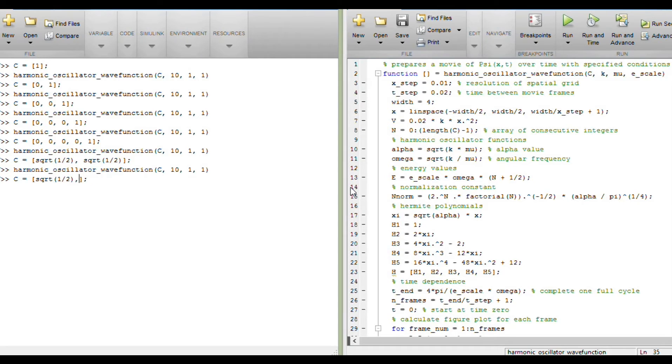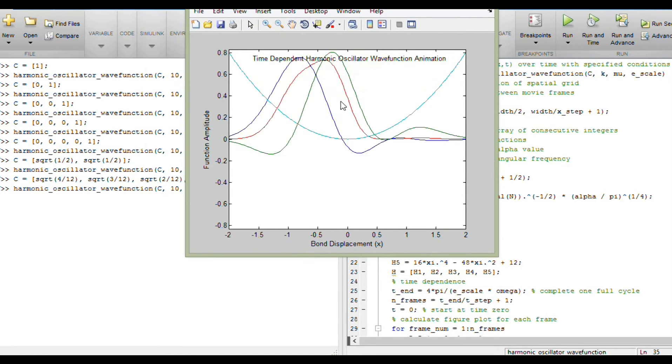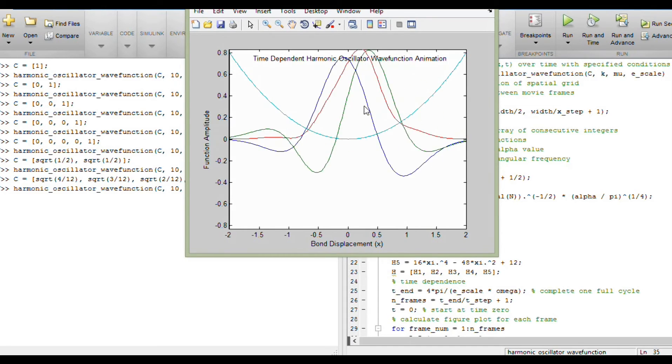And then lastly, kind of crazy, if we look at something like square root of 4 twelfths for n equals 0, 3 twelfths for n equals 1, 2 twelfths for n equals 2, and 1 twelfth for n equals 3. Okay, so dominant coefficients in the lower states getting smaller and smaller as we go up. What can this do? Well, this is a particle which is pretty much traveling back and forth from left to right pretty smoothly across the well here.